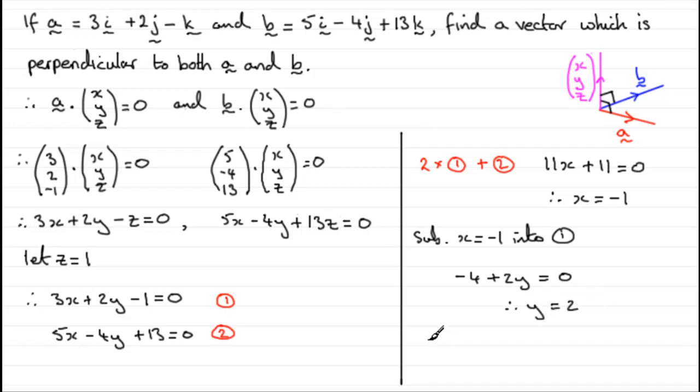So, when it comes to that perpendicular vector, we've got it now. We've got, therefore, perpendicular vector is going to be equal to minus 1i, or just minus i, plus 2j, and our z value was 1, so plus 1k, or plus k.